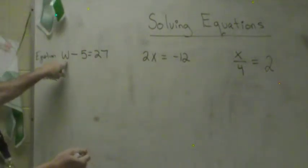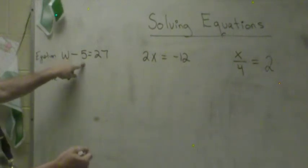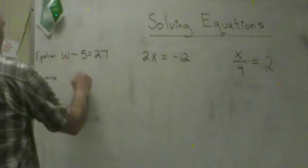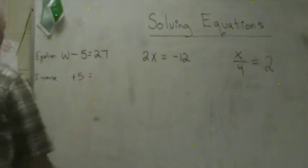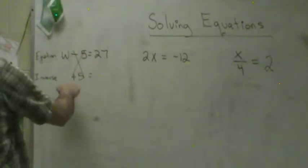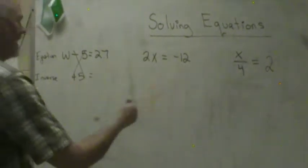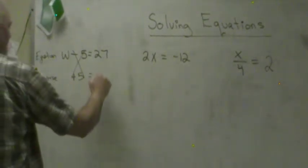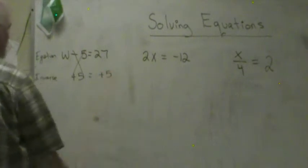Our goal is to get W by itself. Well if we're taking 5 away from it, all we've got to do is add 5. And it makes it disappear. But whatever you do to this side, remember it's a balance beam, we've got to do to this side. So we have to add 5 here.